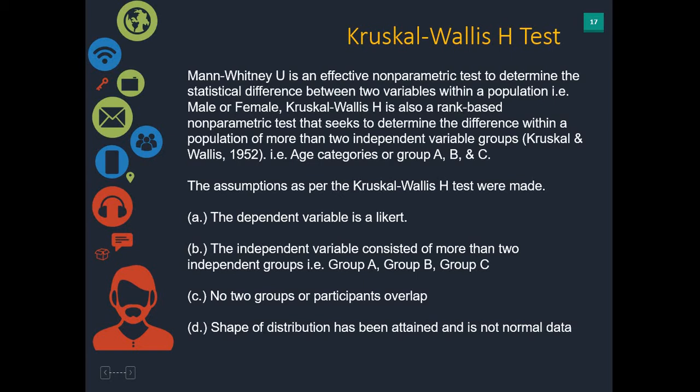While Mann-Whitney U focuses on just male/female or group A or group B, a Kruskal-Wallis H test actually looks at more than two groups. So you could have age categories such as 15 to 28, 29 to 40, and 41 and above, or simply group A, group B, and group C.